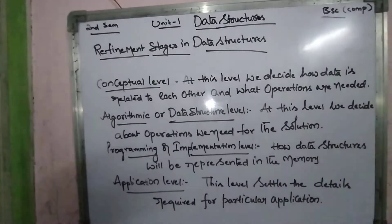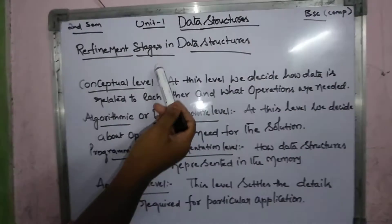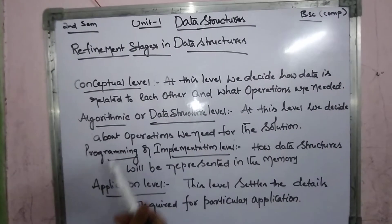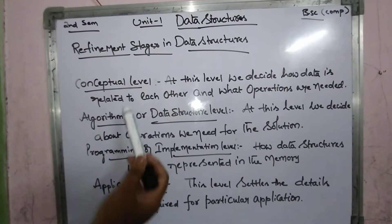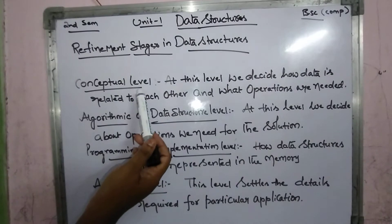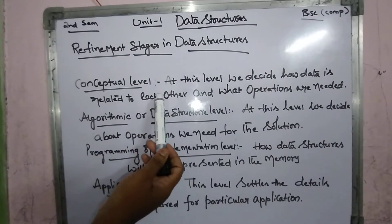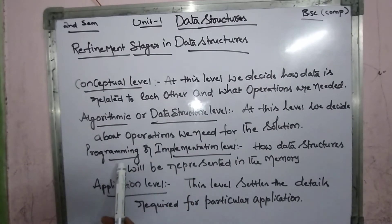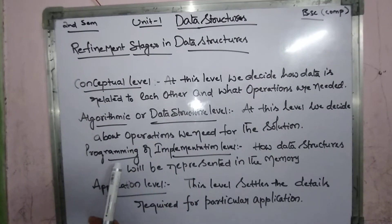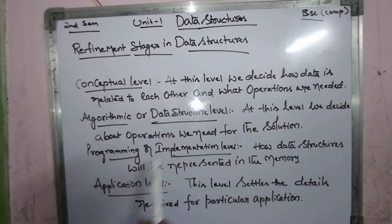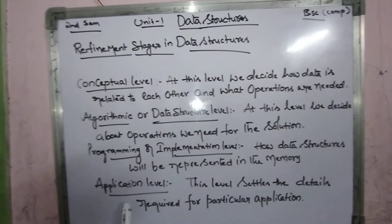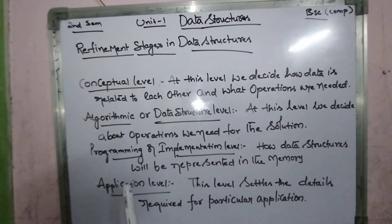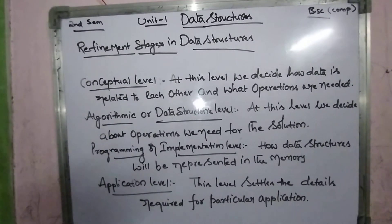In this refinement stages, we are having four types of levels. The first one is conceptual level, the next one is algorithmic or data structure level, the next one is programming or implementation level, and the last one is application level.